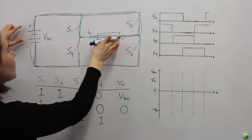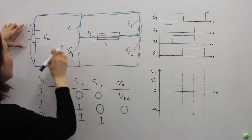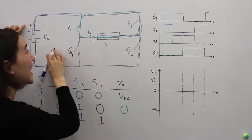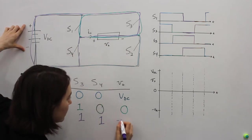So this one is here, the purple one. And we see that now the load is actually, the voltage over the load is negative VDC. So negative VDC.